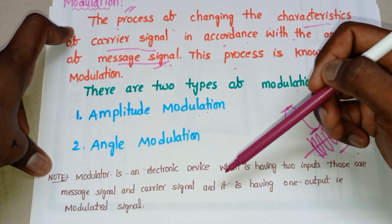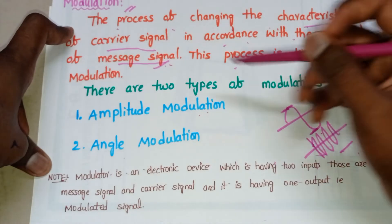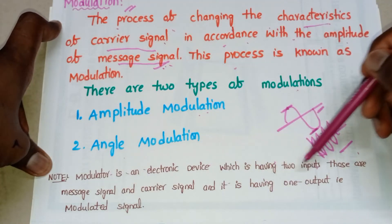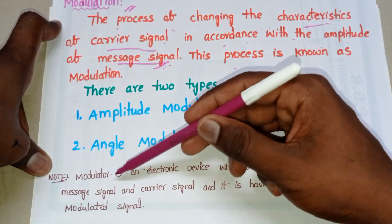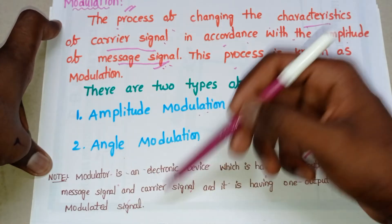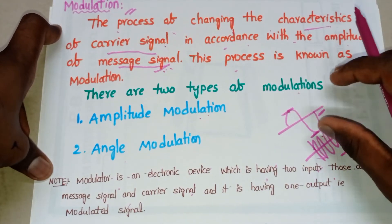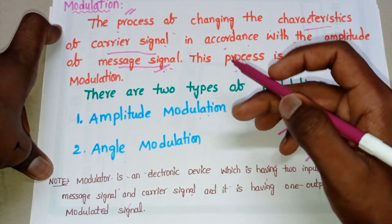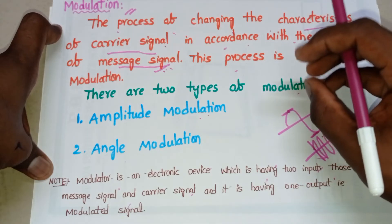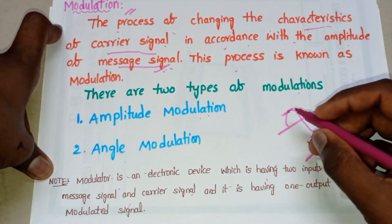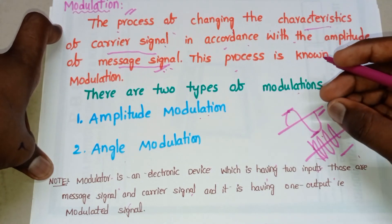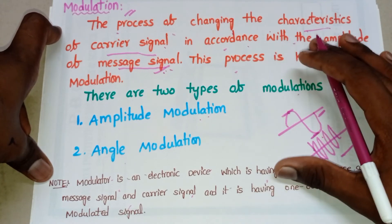Note that a modulator is an electronic device which has two inputs: the message signal and the carrier signal. It has one output, which is the modulated signal. In the modulated signal, the low-frequency message signal is superimposed onto the high-frequency carrier signal.